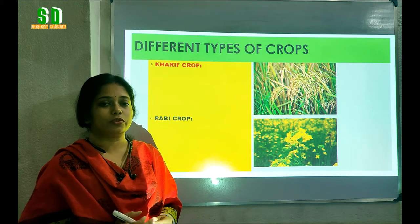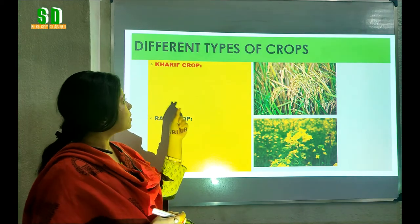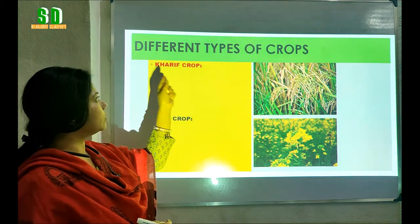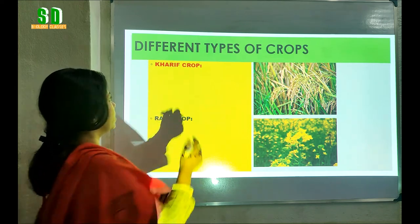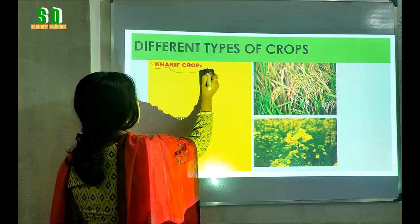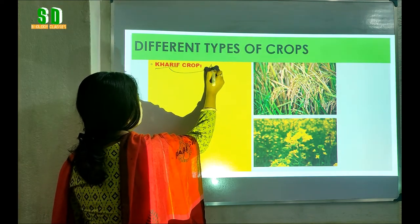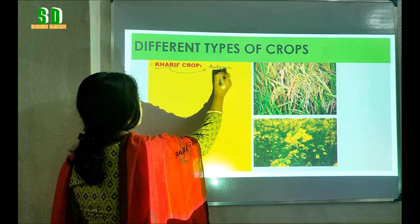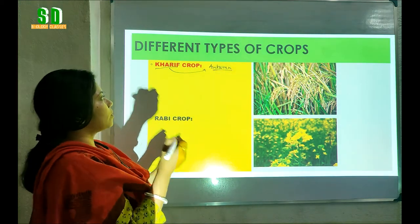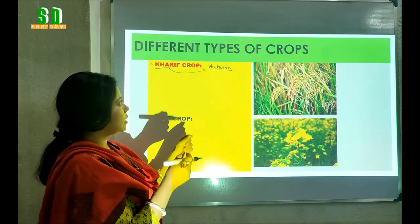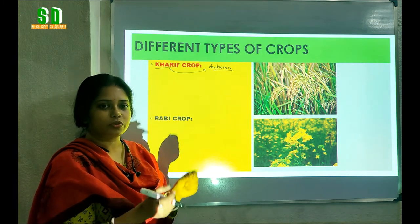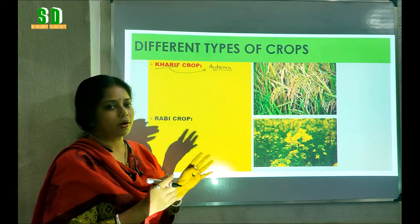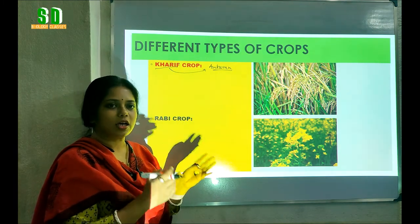First of all we have to know the meaning of the word Kharif. What is the meaning of the word Kharif? Kharif means autumn. So from here we can guess that the crops which are grown during the autumn season are actually called the Kharif crop.